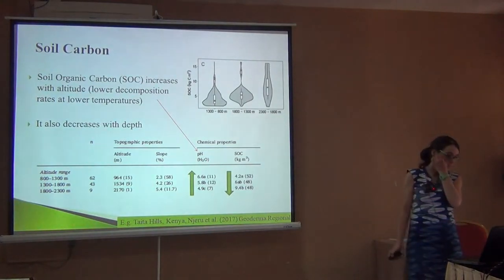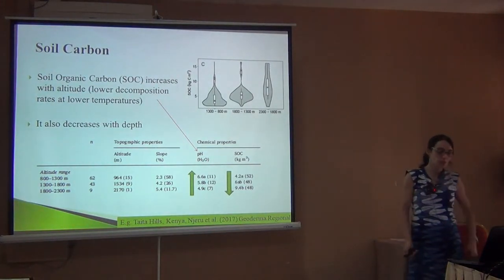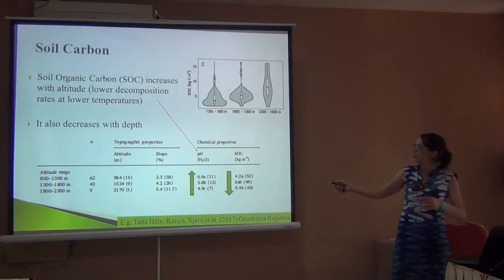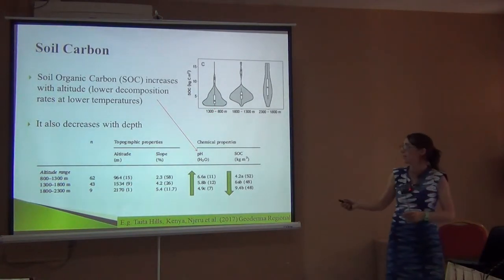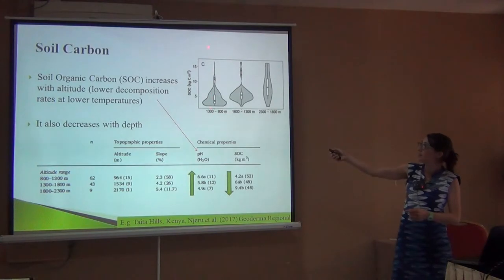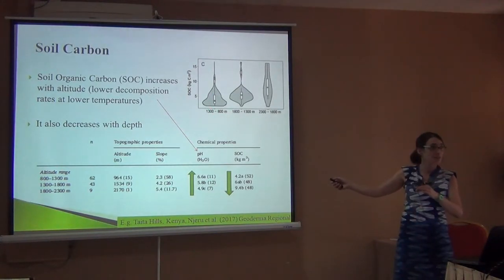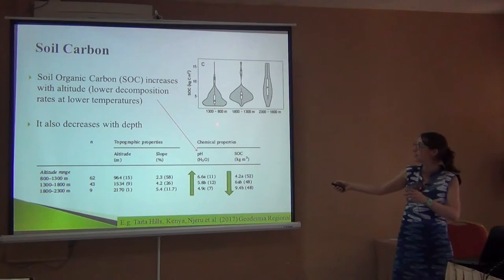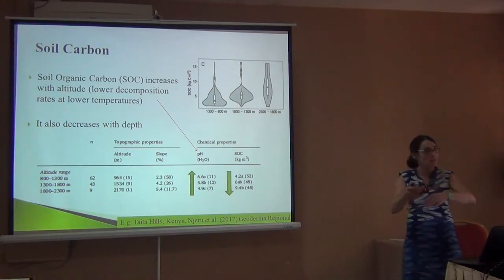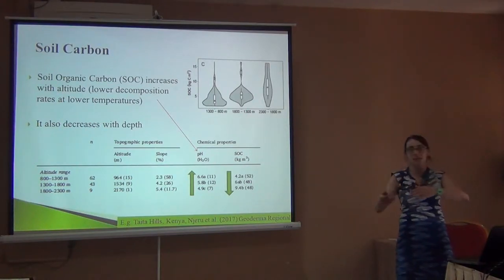A couple of notes on soil carbon. This figure is a little hard to understand — the surface is here and it goes deep this way, so it's counterintuitive. But the idea is that you have more carbon at the surface than as you go deep. This is shown at three elevations, because of the decomposition and mineralization of carbon.